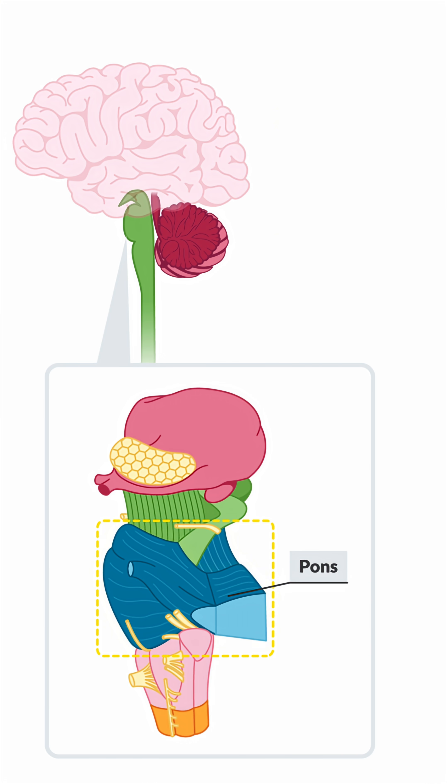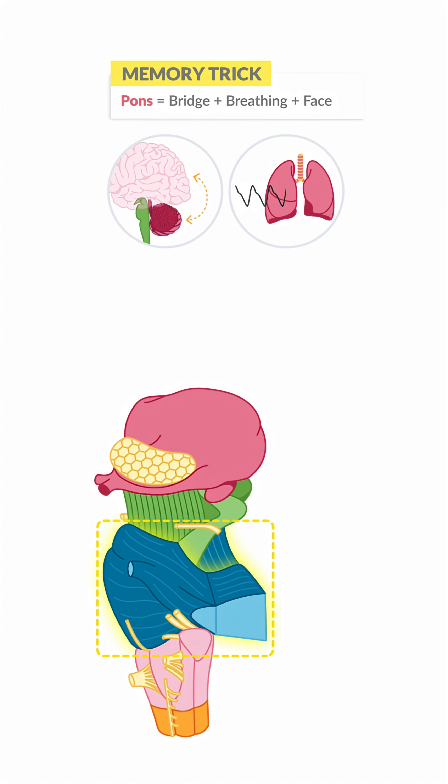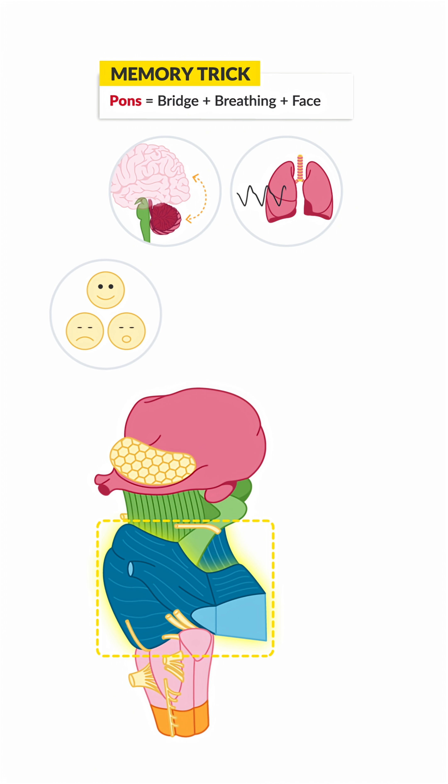Now, the pons, on the other hand, acts like a bridge, coordinating messages between the cerebrum and the cerebellum. It helps to control breathing rhythms, facial expression, chewing, and even sleep cycles.